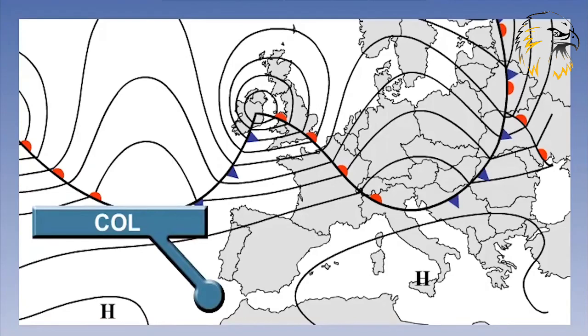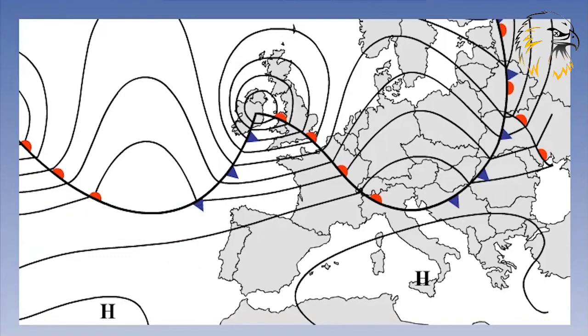Because of the wide spacing of the isobars, the wind found within a col is very light and variable.